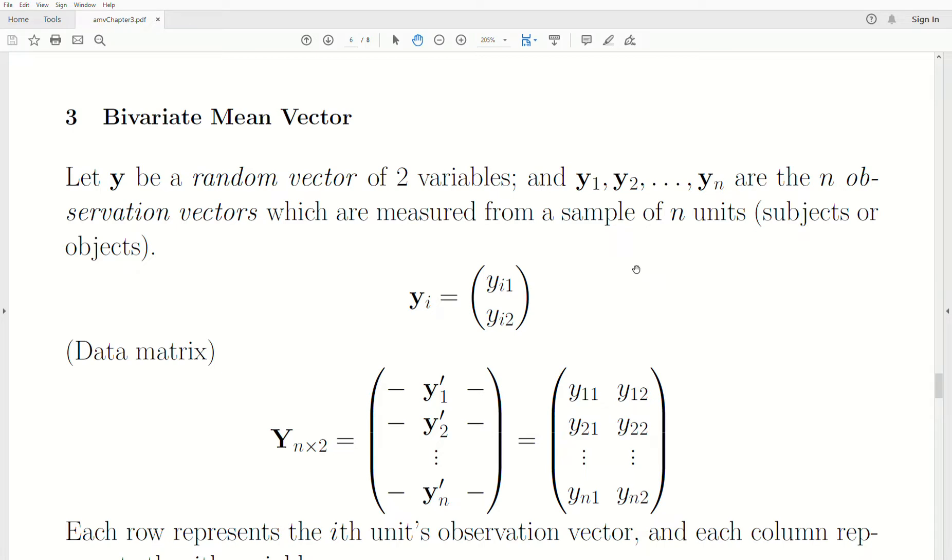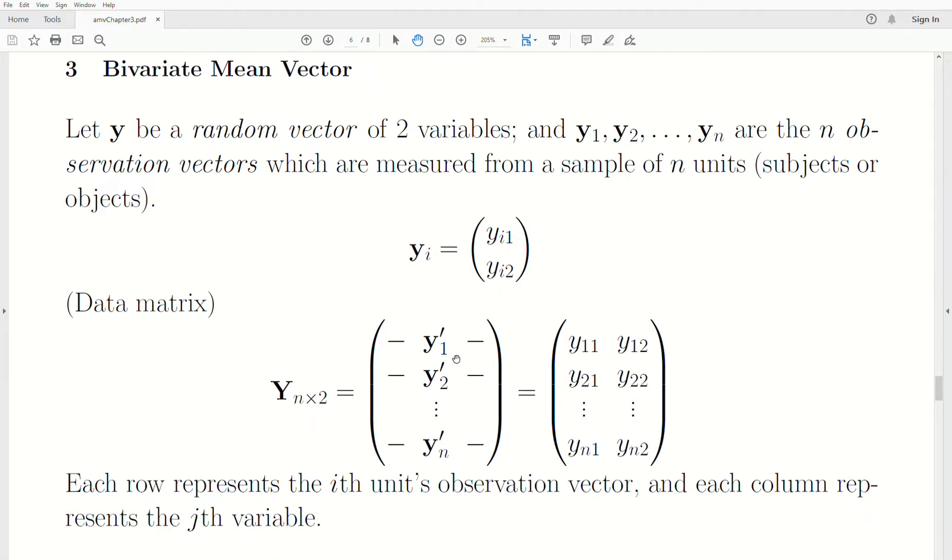The ith observation vector, call it yi, so that's the ith person, ith unit, is a column vector of two components because we're in bivariate, which means two. The first index i is the subject, and the second index, one is the first variable, two is the second variable.